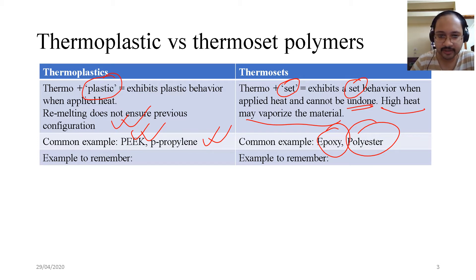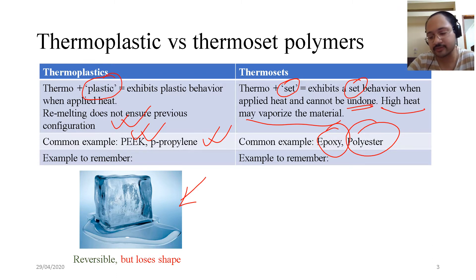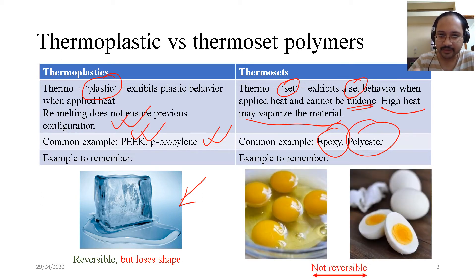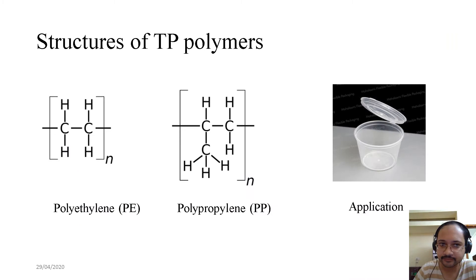Some analogies to help you remember: for thermoplastics, think of ice — it is reversible but loses shape, so when you heat ice it melts but cannot regain the same shape. For thermosets, it is not reversible — imagine you have an egg and you boil it; you cannot reverse that process.